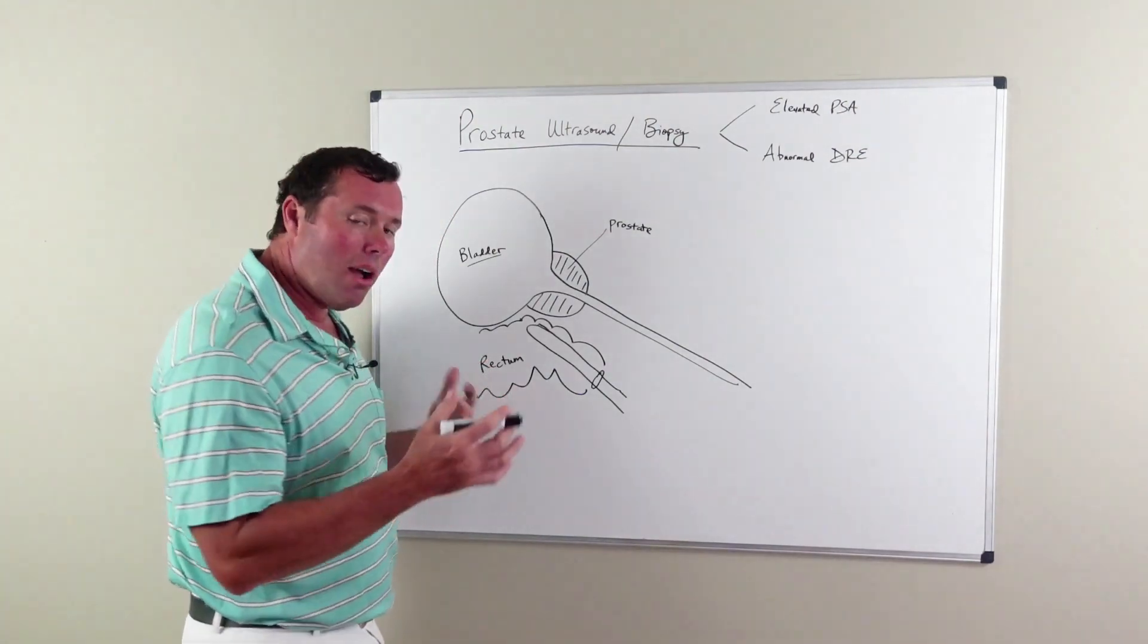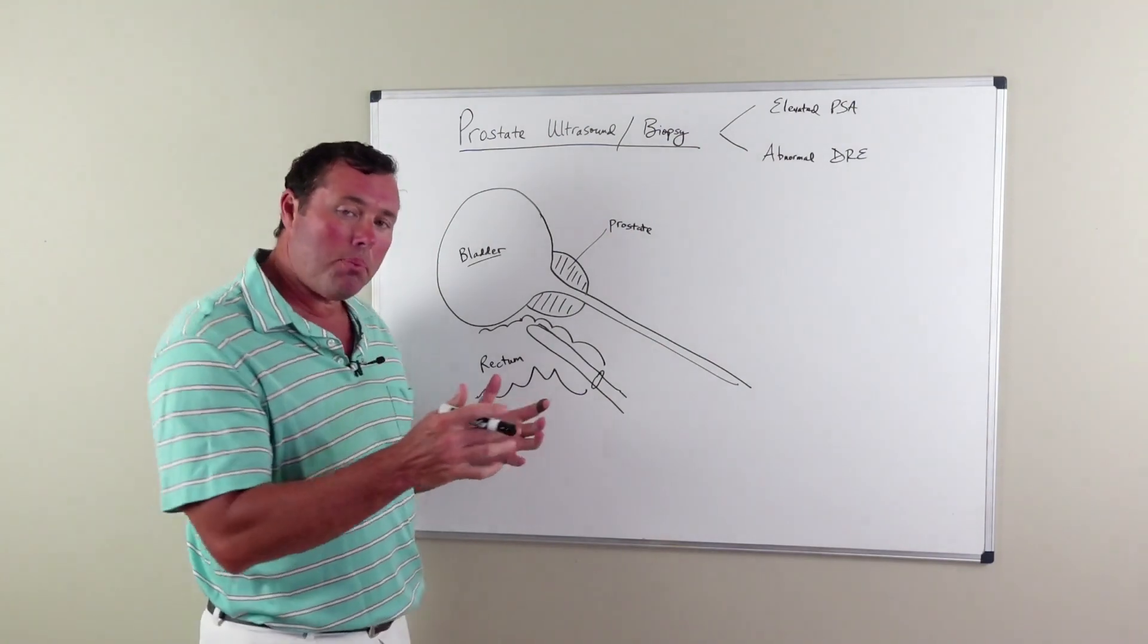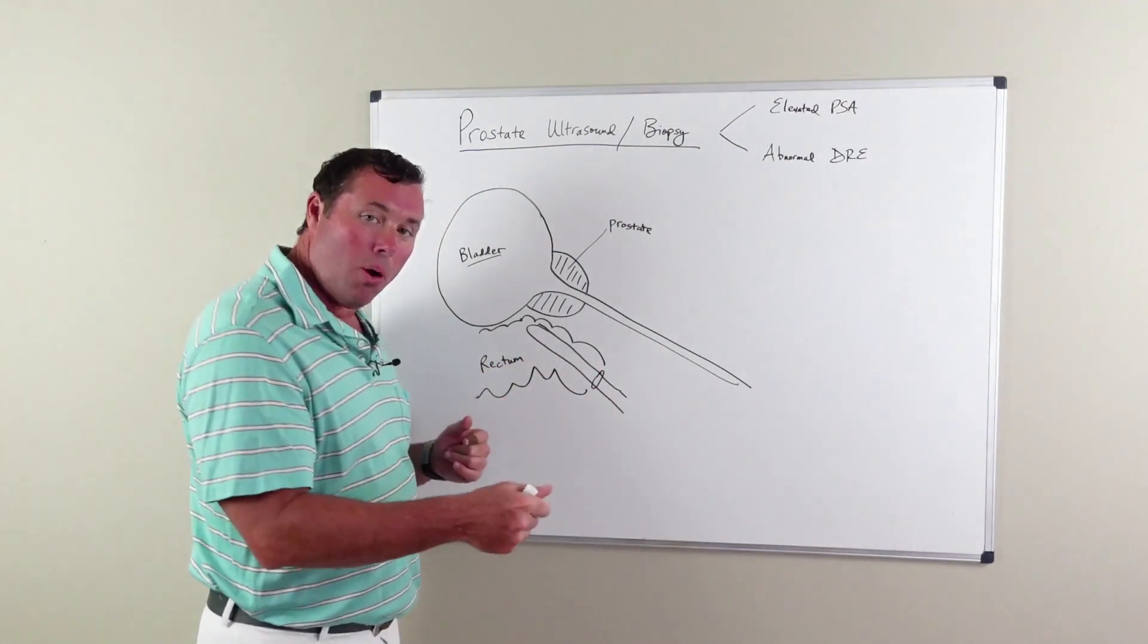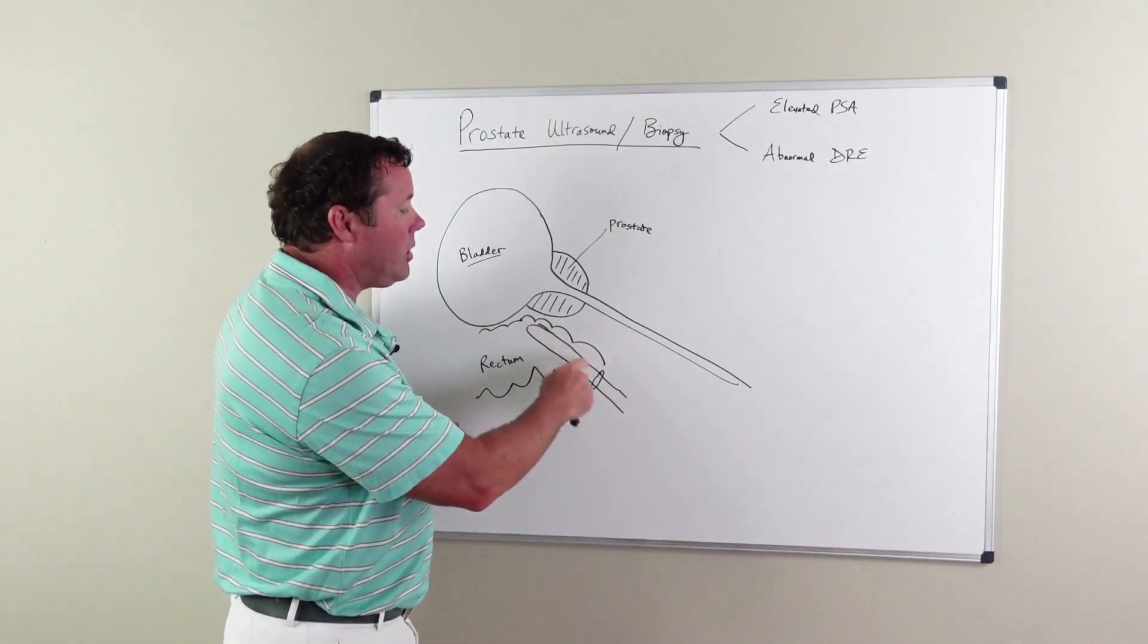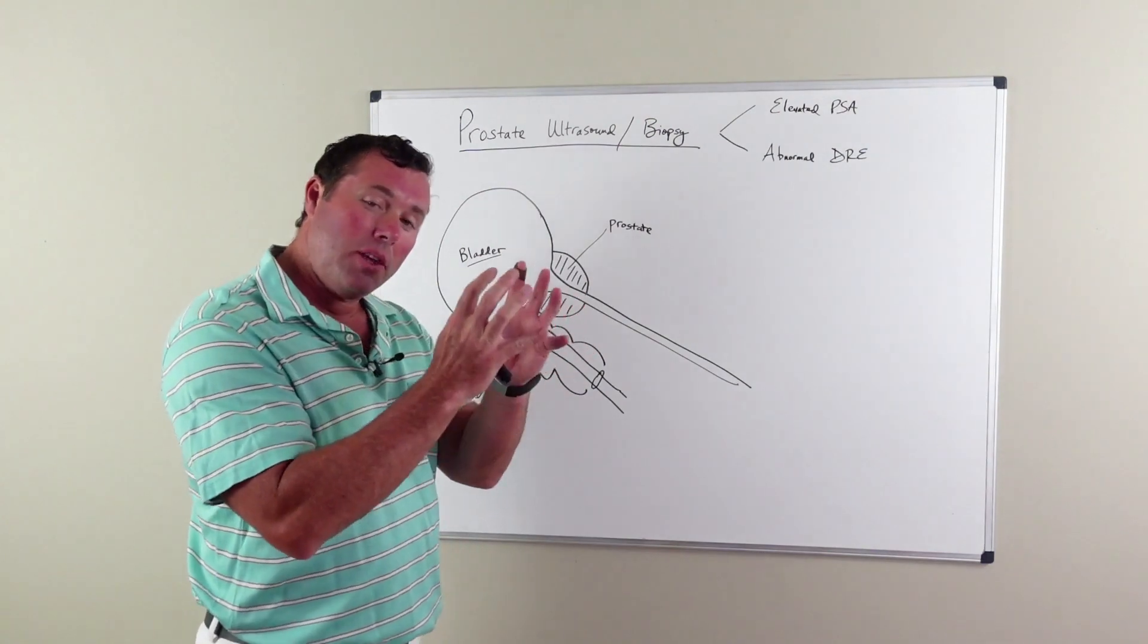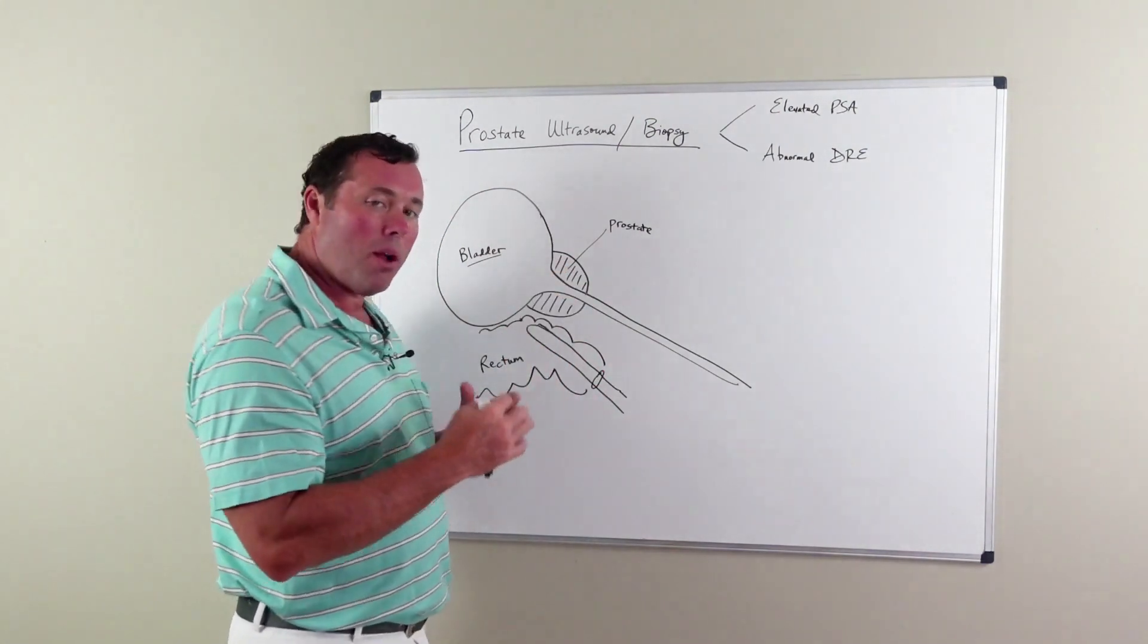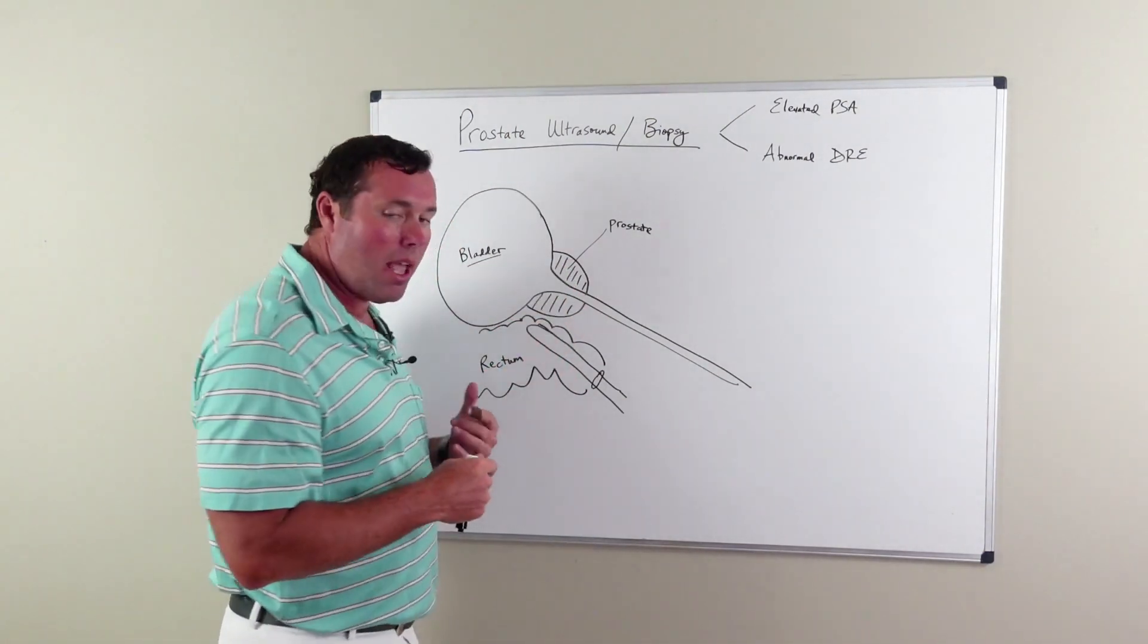In talking about the prostate ultrasound with biopsy, it's typically done on the patient's lateral side. An ultrasound probe is placed into the rectum, and the goal of that ultrasound probe is to visualize the prostate - not only the prostate, but also where the needles go and where the biopsies are taken.